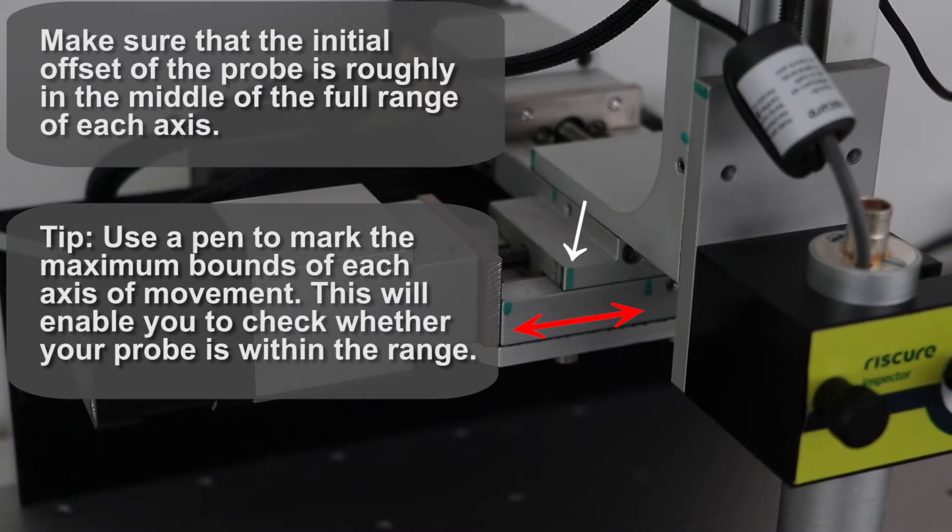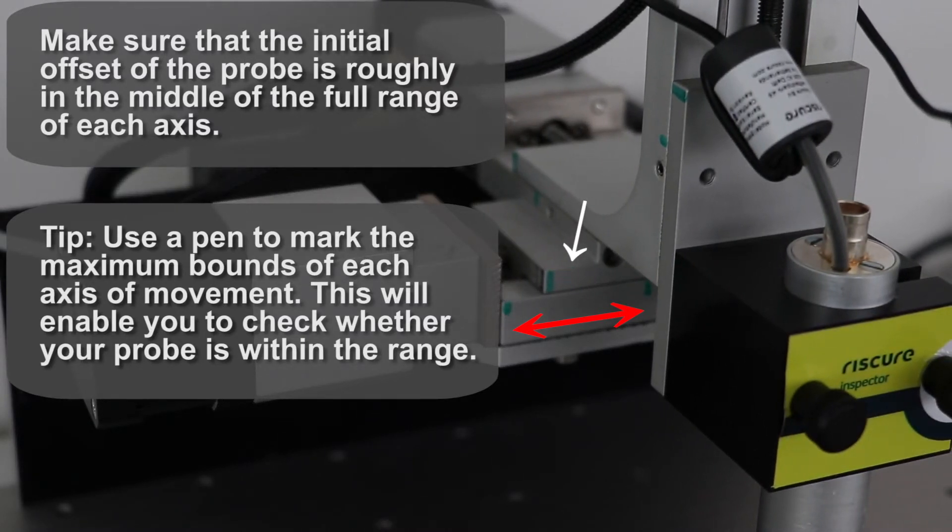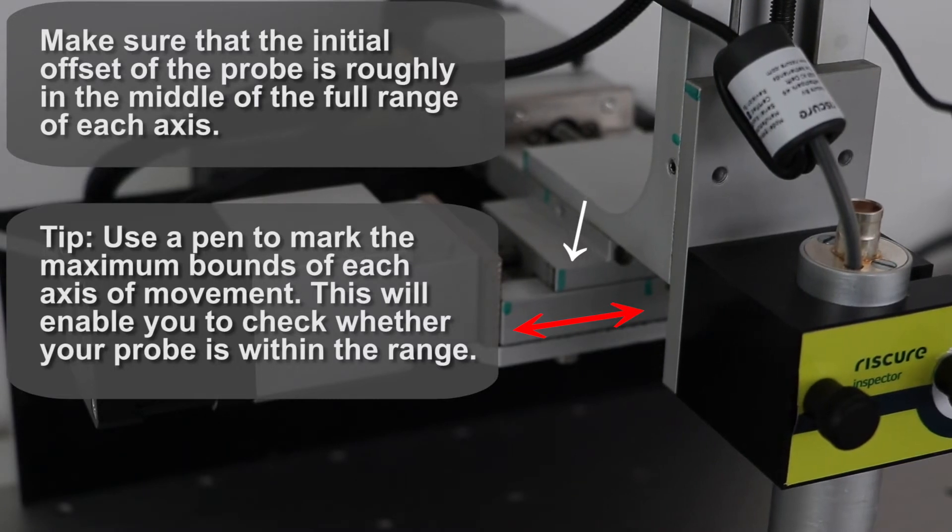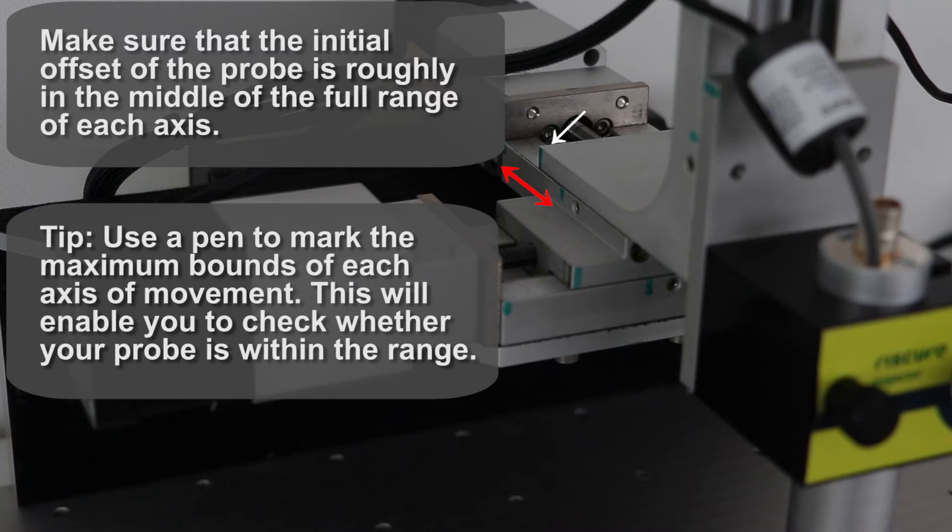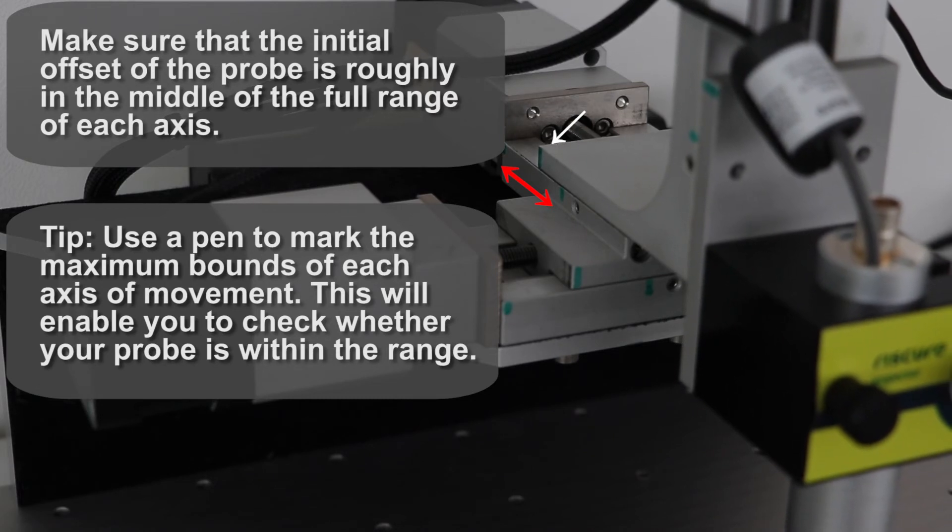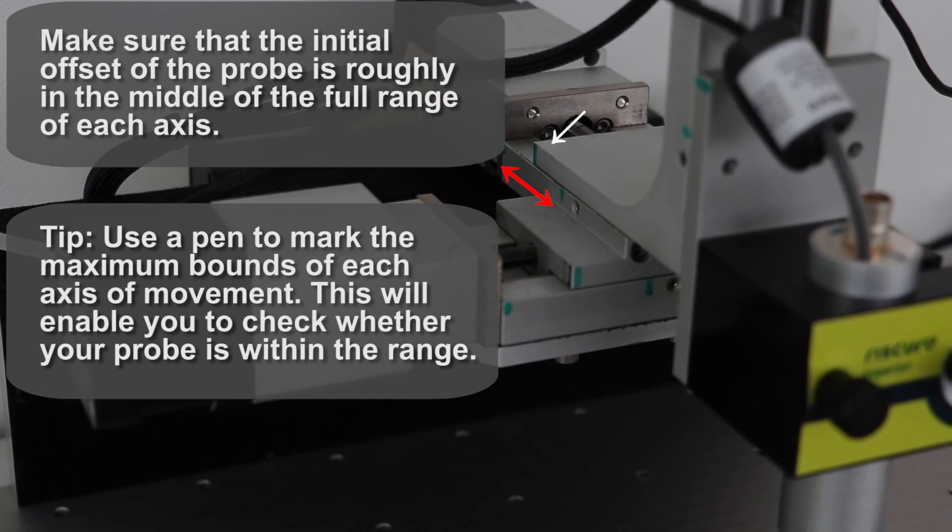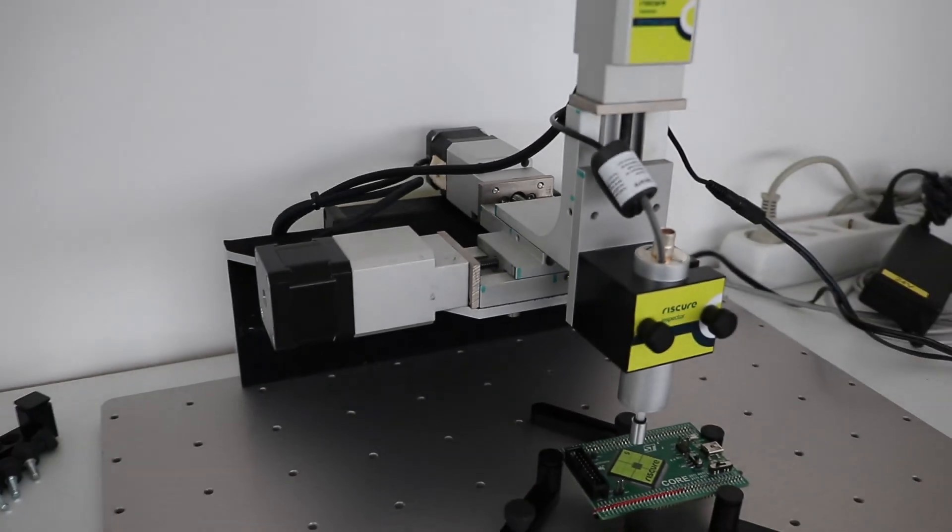Make sure from the very beginning that the initial offset of the probe is roughly in the middle of its full range of each axis. A nice tip is to mark the points that the probe can reach at each axis with a marker. In that way, you'll always be aware of whether you are inside the range of the station. Follow these tips and good luck!